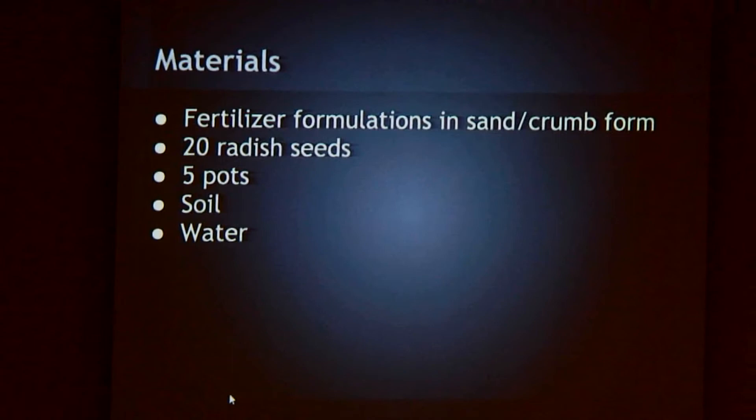Materials were fertilizer formulations in sand and crumb form, 20 radish seeds, 5 pots, soil, and water.